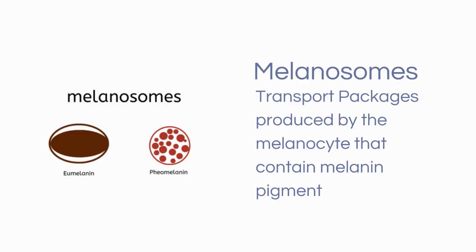Within the melanocyte itself, little packages are evident. These neat little membrane-bound packages are called melanosomes. These melanosomes go through four stages of maturation before they are able to leave the melanocyte and provide melanin pigment to their surrounding keratinocytes.